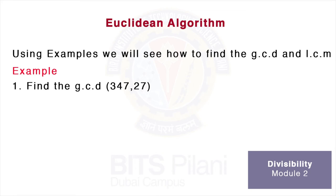We will use the Euclidean Algorithm and divide 347 by 27, writing it as 347 = 27 × 12 + 23.